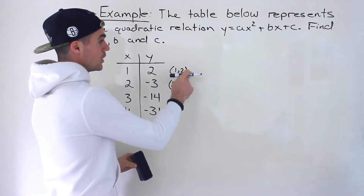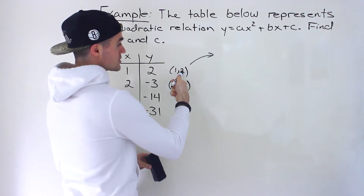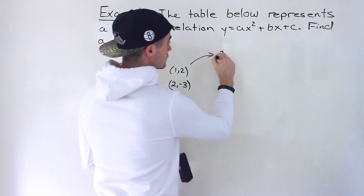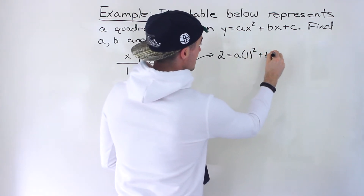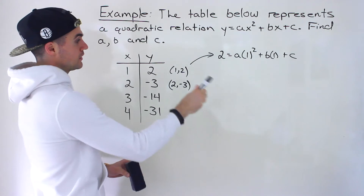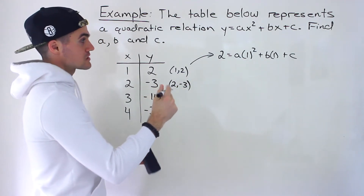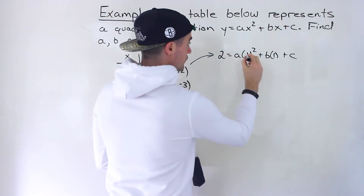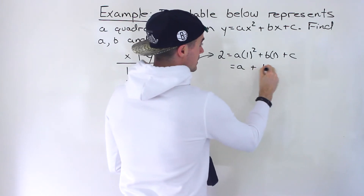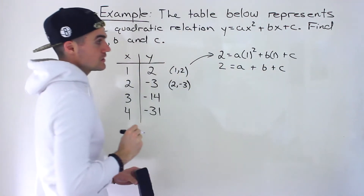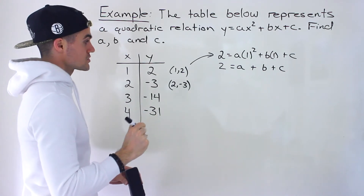For example, if we take the coordinate 1 and 2, we would plug in 2 for y. So we'd have 2 equals a times 1 squared plus b times 1 plus c. Simplifying: 1 squared is just 1 times a is just a, and b times 1 is just b plus c. So we get 2 equals a plus b plus c. That's equation one.